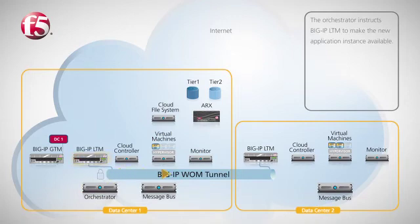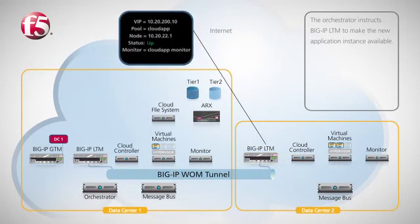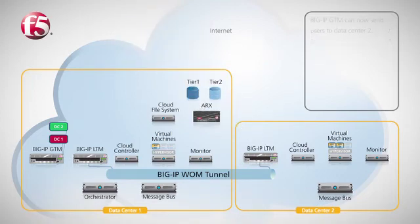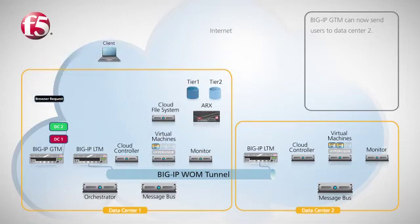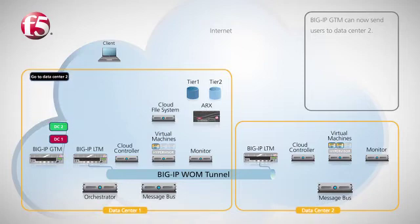The orchestrator then instructs Big IP LTM to make the new application instance available as it is running and ready to receive connections. The next time Big IP GTM receives a request for the application, it can send the user to data center 2 instead of data center 1, which is already overloaded.